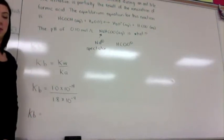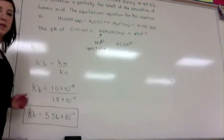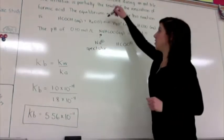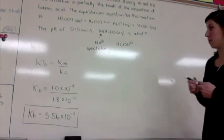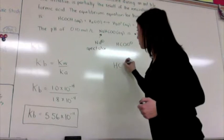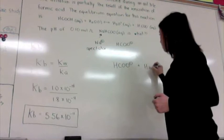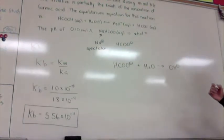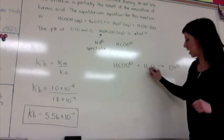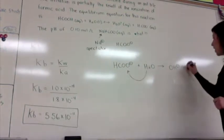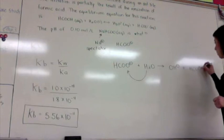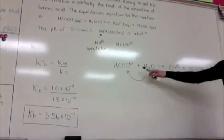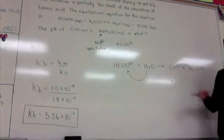Now that we have calculated our Kb value to be 5.56 × 10⁻¹¹, we can do an ICE table. We are not going to use the equilibrium equation given in the question — we are actually going to use the base equilibrium equation, so we have to write that out. Bases such as HCOO⁻, when added to water, always create an OH⁻ or hydroxide ion. The water donates one of its hydrogen ions to the base, creating methanoic acid. We are dealing with a base, which is a proton acceptor and creates a hydroxide ion, so we can now set up our ICE table.